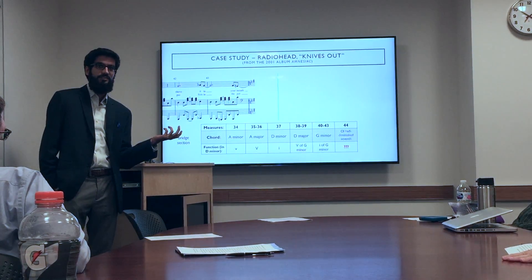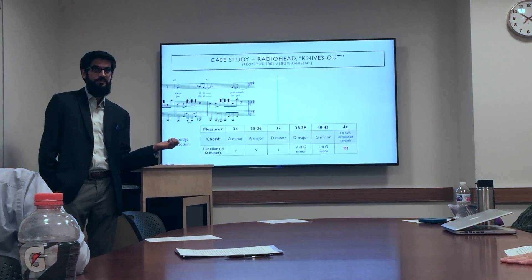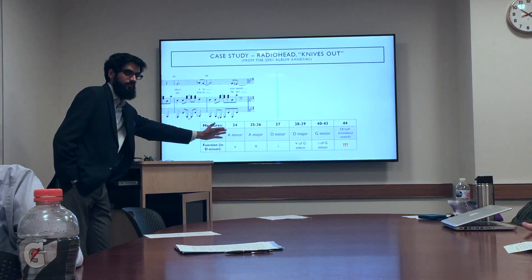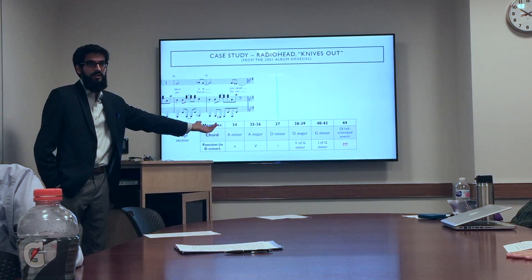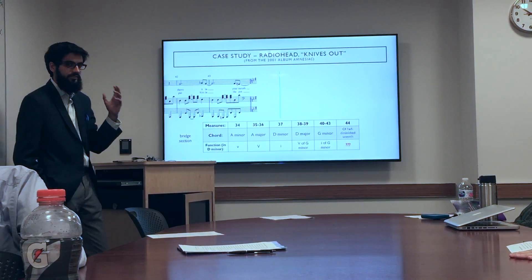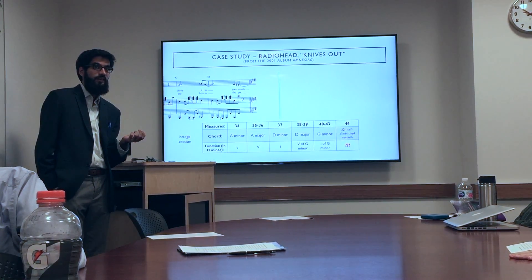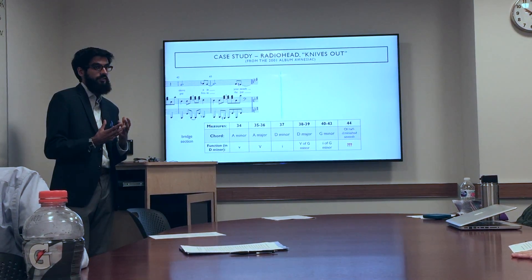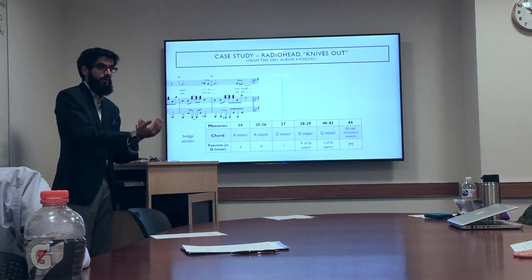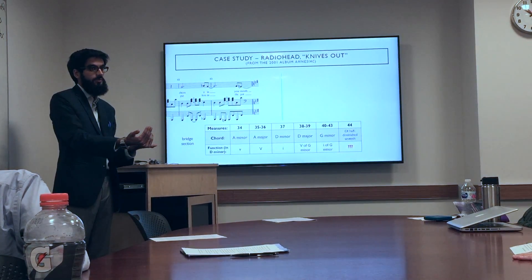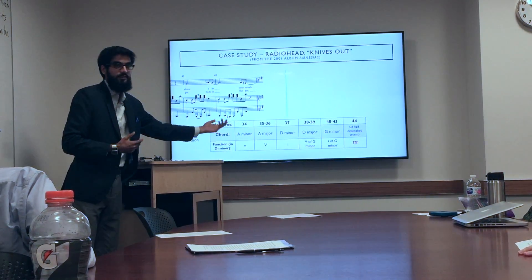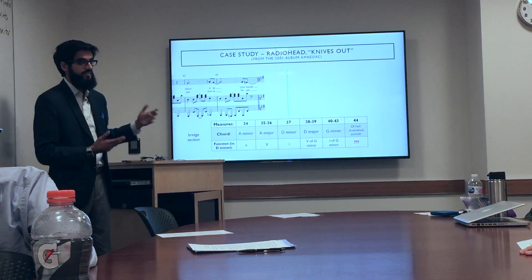We still get this mysterious C-sharp half-diminished seventh chord. Now we're no longer in C minor — we're in D minor, and we see a five-one progression in D minor. So that C-sharp half-diminished seventh chord starts to make sense: it is diatonic to a D minor scale, so maybe it's a way of trying to get to D minor but failing to do so. In the bridge section we get there, but only for one bar. Let's see what happens at the end in the coda.